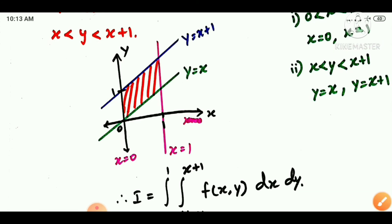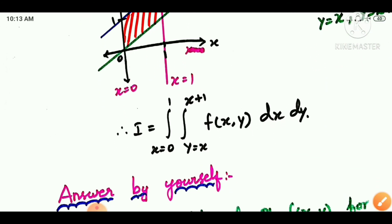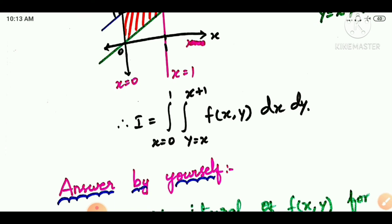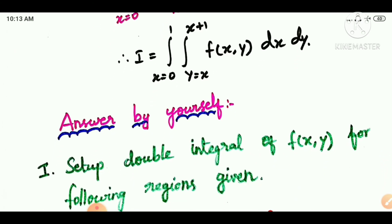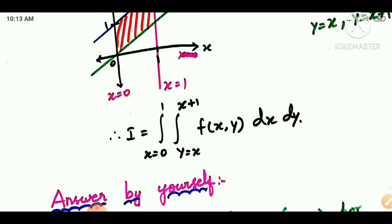If we draw the graph, this is the given region. Now we set up the integral. The x limit is from 0 to 1, and the y limit is from x to x plus 1. It's very simple once we identify the region.